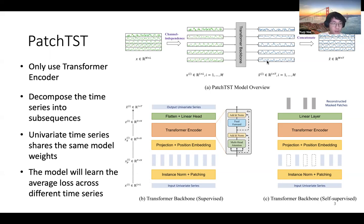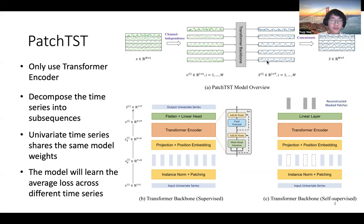For the test step, each channel will only predict itself, so they won't affect each other in prediction. But the shared backbone actually indirectly learns all the information from different channels.